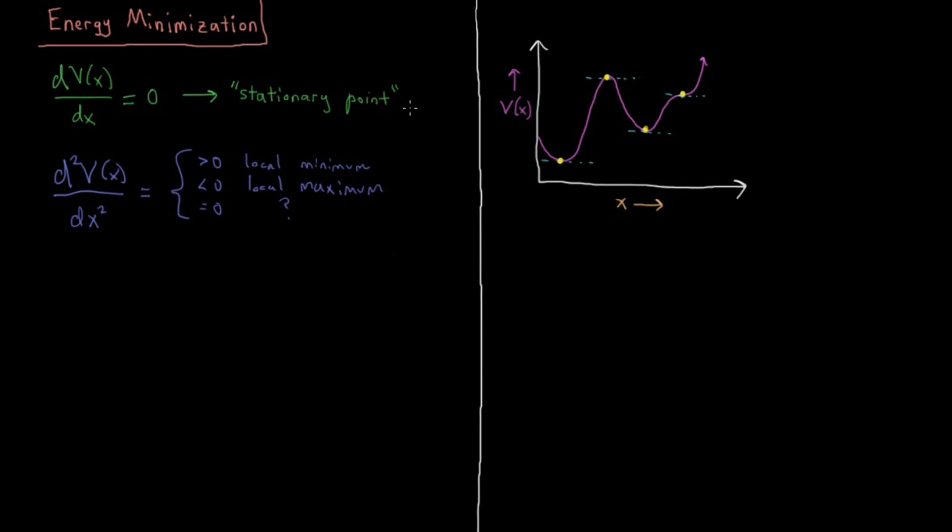Much as we did in the previous video, we need to generalize these results from one dimension to 3N dimensions. When we have N atoms, we have 3N coordinates to worry about, not just the one coordinate. Let's draw a table to compare the 1D case and the 3N dimensional case.